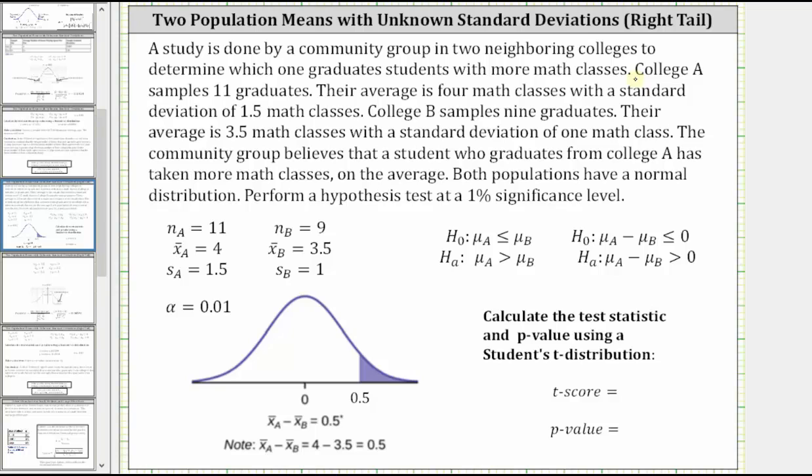College A samples 11 graduates. Their average is four math classes with a standard deviation of 1.5 math classes. College B samples nine graduates. Their average is 3.5 math classes with a standard deviation of one math class. The community group believes that a student who graduates from college A has taken more math classes on average. Both populations have a normal distribution. Perform a hypothesis test at a one percent significance level.